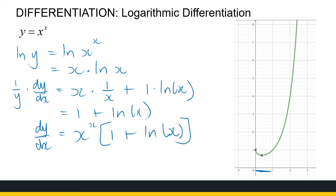So dy/dx equals y times (1 + ln x), which is x^x times (1 + ln x). This is an occasion where logarithmic differentiation is really our only way out — we don't have differentiation rules that we can apply to a function with a variable in both the base and exponent, so we use logarithmic differentiation to get there.